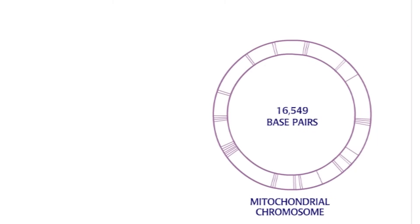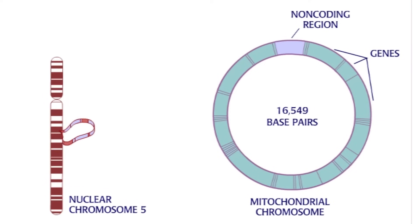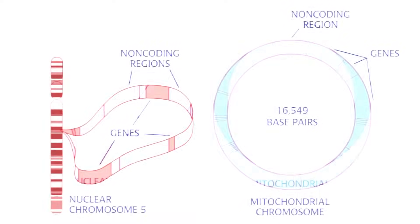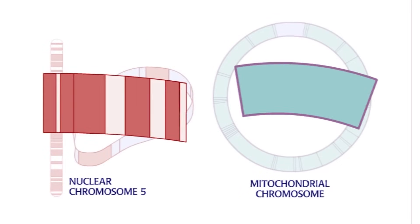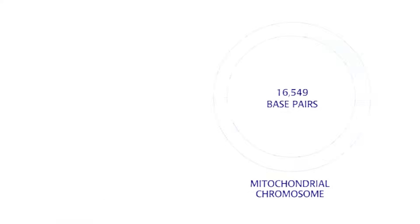Second, the mitochondrial chromosome is tightly packed with genes. Unlike nuclear chromosomes, which have large intergenic regions of non-coding DNA between genes. Third, most mitochondrial genes lack introns, which are non-coding information within nuclear genes.